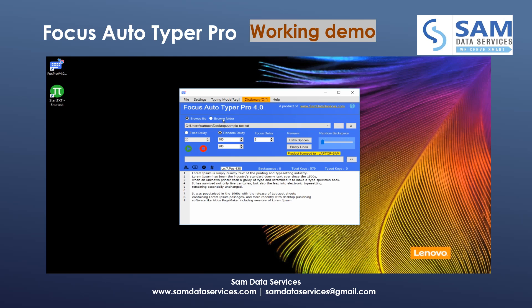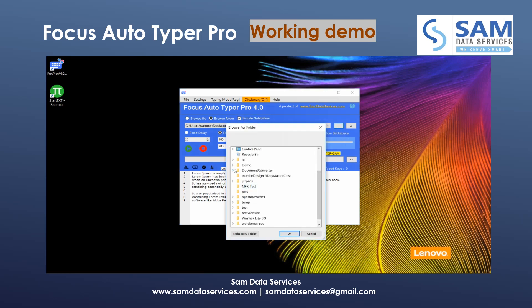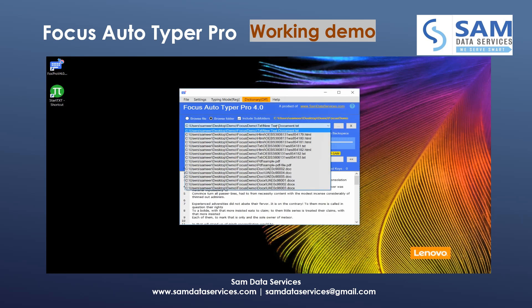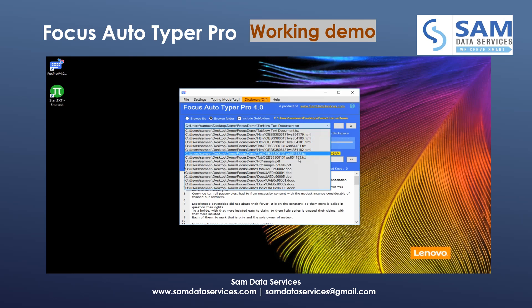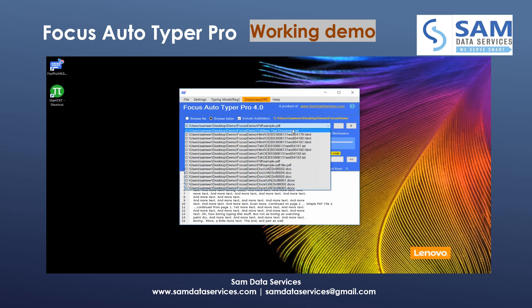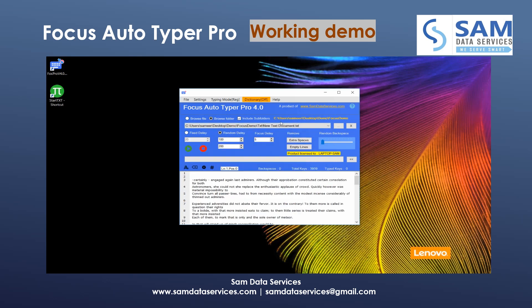Let's go through the browse folder option. Selecting the include subfolders option and clicking on browse. Selecting my folder — here you can see all the files available in the folder and its subfolders are loaded. In the drop-down you can see the different file extensions like HTML, PDF, DOC, and DOCX. The selected folder path is displayed here.